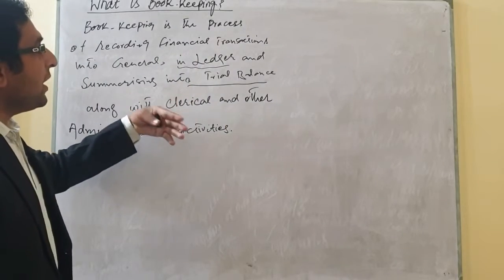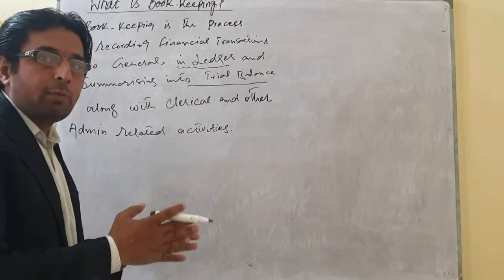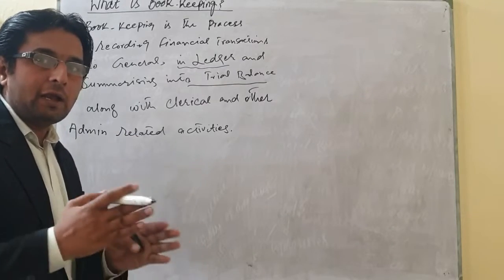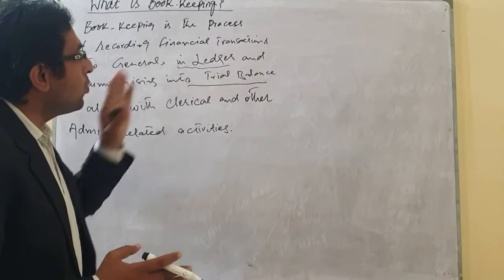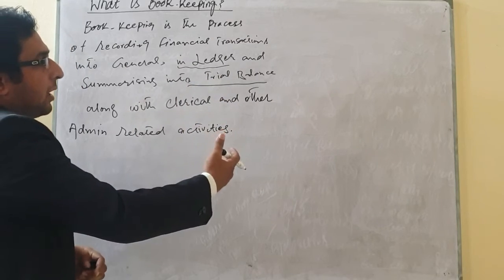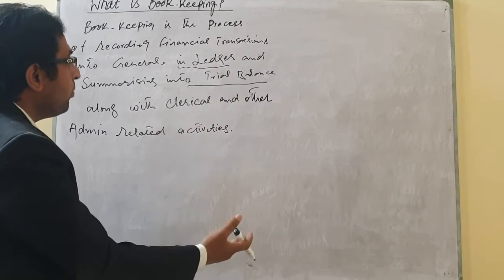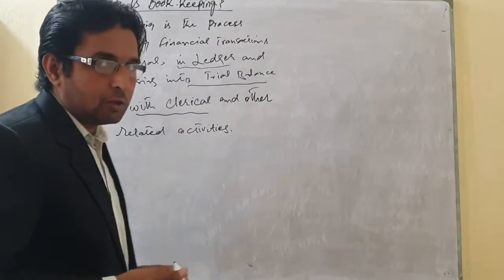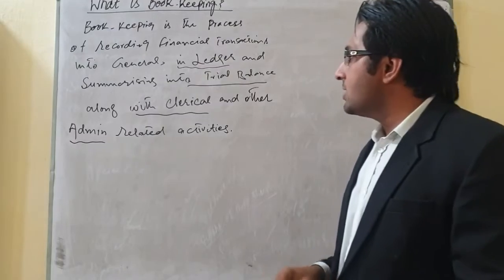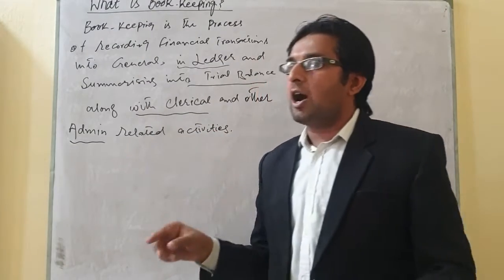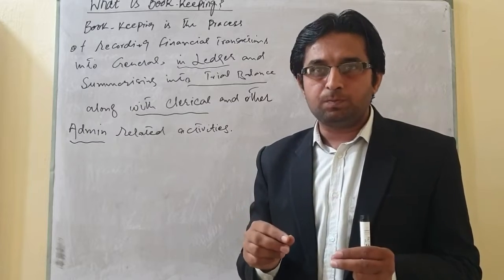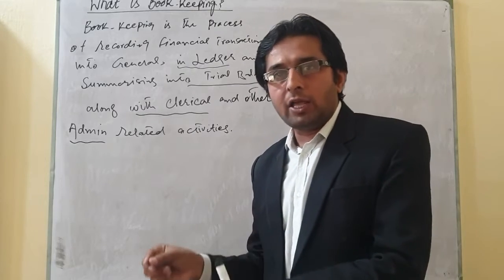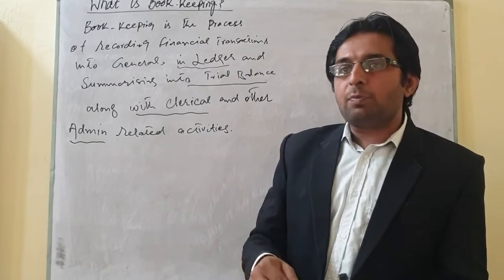After recording into accounts, the balance is shifted into the trial balance. While transferring into the trial balance, it basically tells us about the arithmetic accuracy — whether our transaction amounts are accurately entered or not. This will be cleared through the trial balance. After entering the data into trial balance, the other part of bookkeeping is clerical and admin related activities, such as preparing payrolls, issuing invoices, depositing cash into the bank, record keeping, and similar activities.